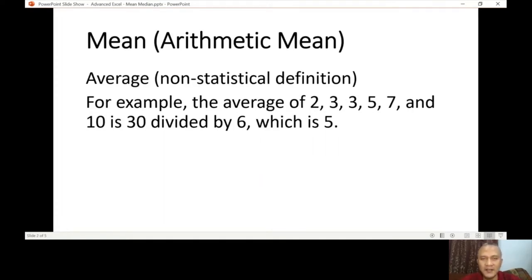Let's discuss the definition of this function and see what function we're going to use. Mean or arithmetic mean in non-statistical or mathematical common definition is the same as average. How do we do this? For example, from your example here, the average of 2, 3, 3, 5, 7, and 10 - so 6 numbers. You add them all together and then divide it by the number. So it's 30 divided by 6, so the average is 5. That's what we call mean. It's easy.